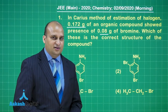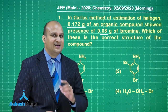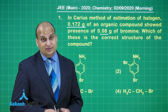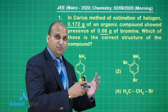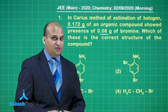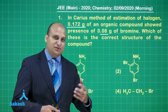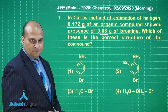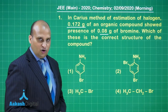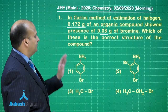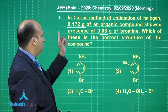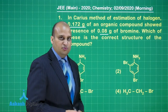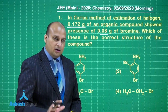First of all, did you study the Karius method? Many students felt, oh, Karius method — why to do it, it's so easy! And then they feel, oh, there is a different type of question. The formula given in the book is different. Here they are talking in a bit different terms. See, dear friends, the question is very, very easy. Do not worry about the Karius method at all. Just think that there is an organic compound whose mass is 0.172 grams, in which there is 0.08 gram of bromine.